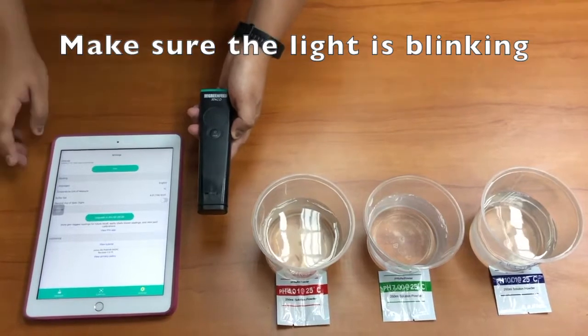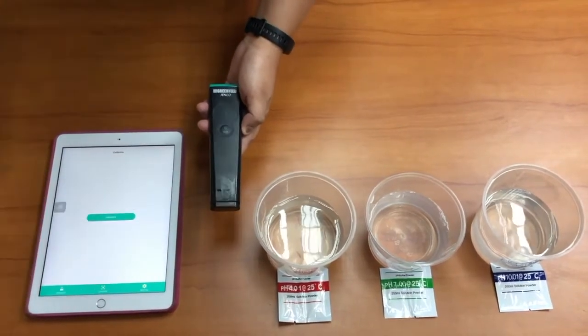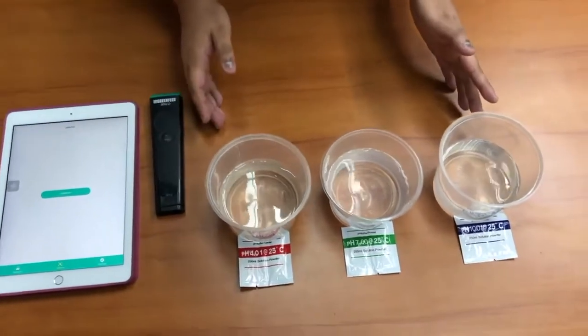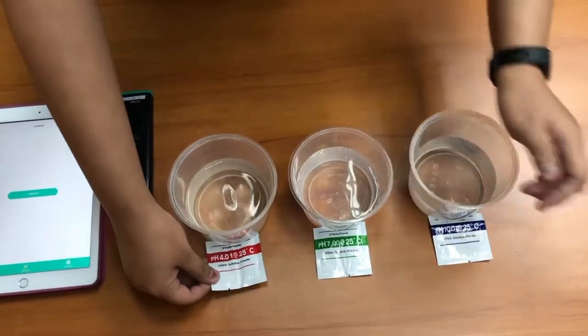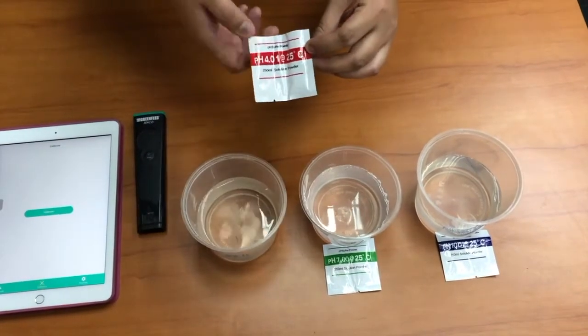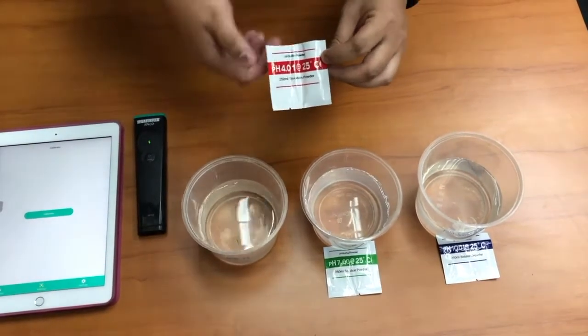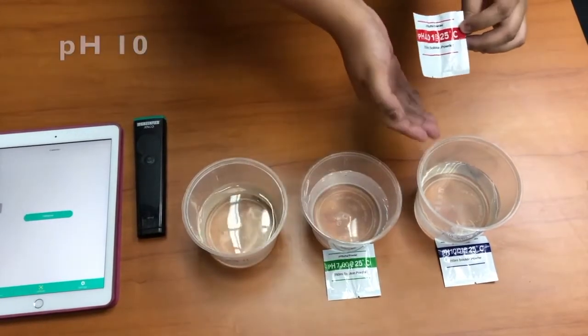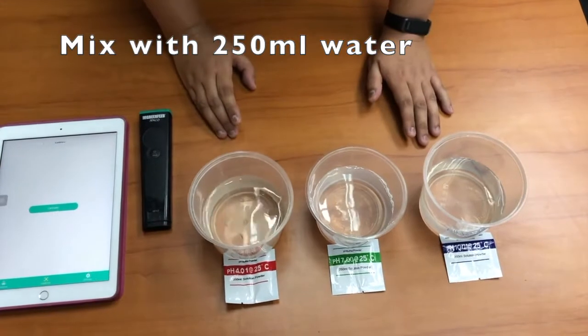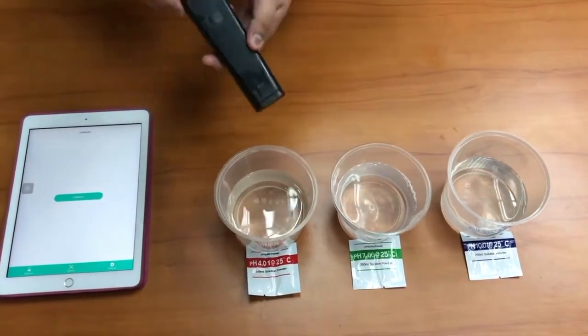Now before we calibrate, we have to make these three solutions. These solution powders, which are pH buffer powders, are provided by Jenco in the form of pH4, pH7, and pH10. We have pre-mixed them in 250ml solution water. Now we want to calibrate this pH meter.